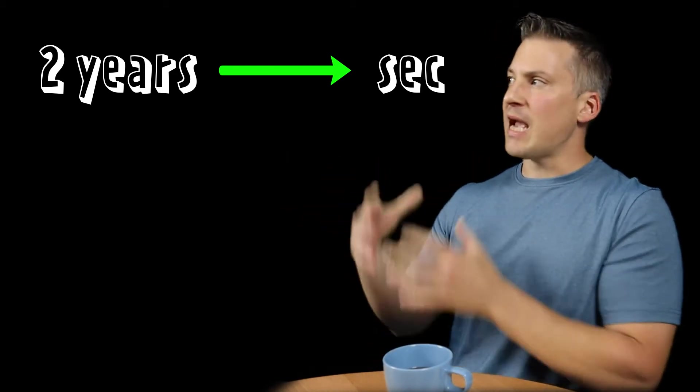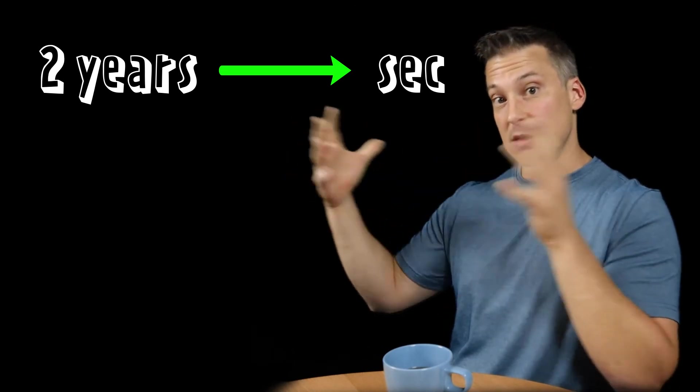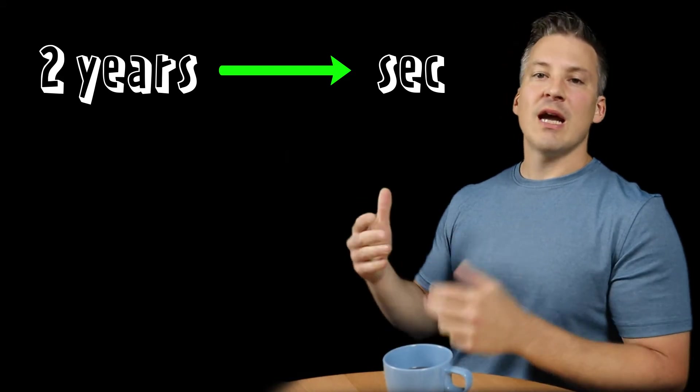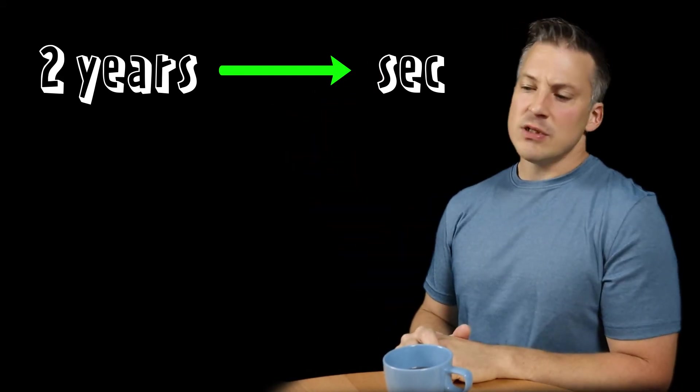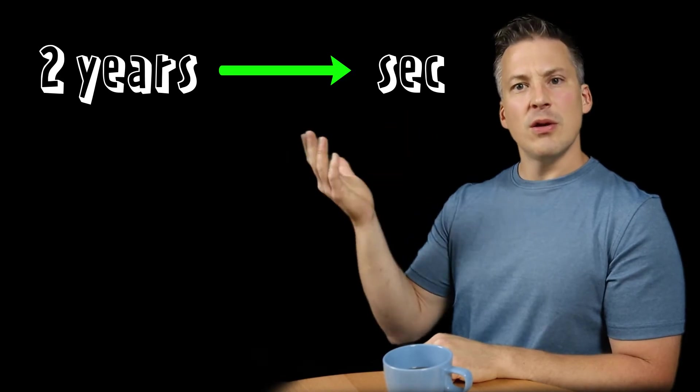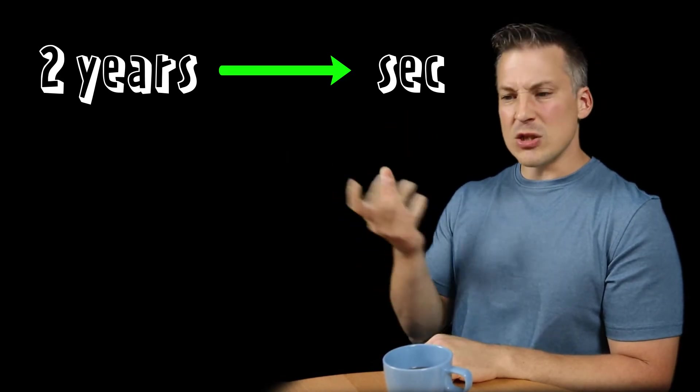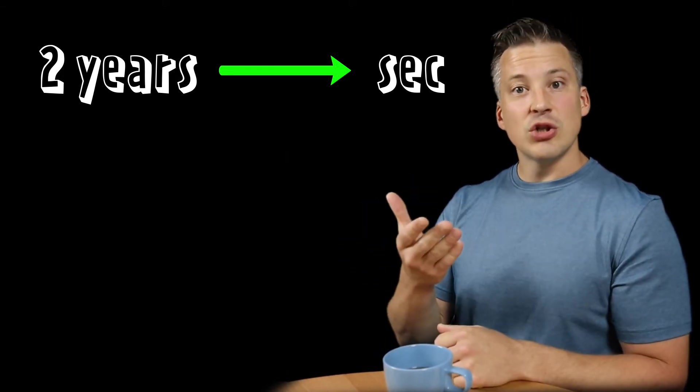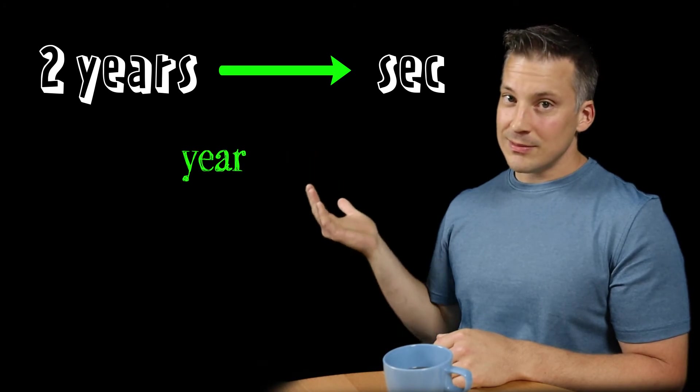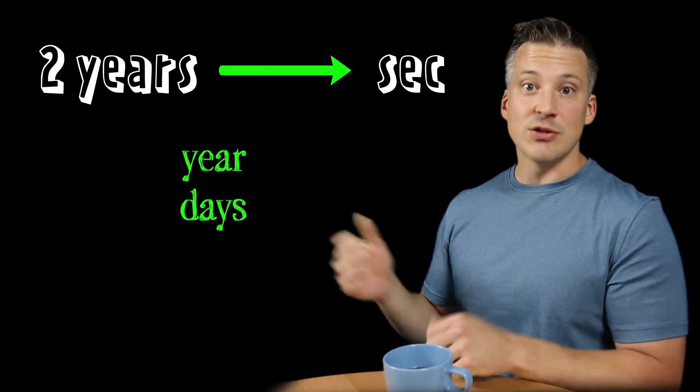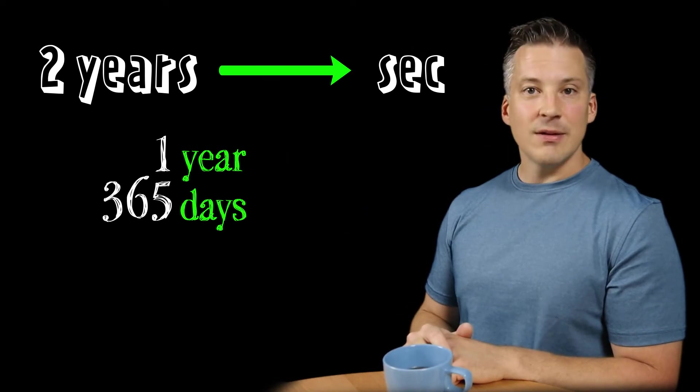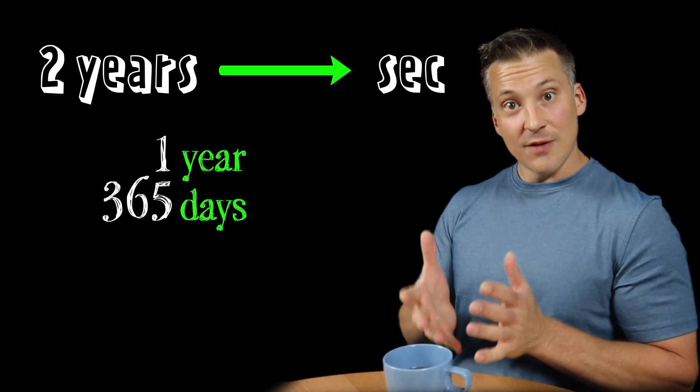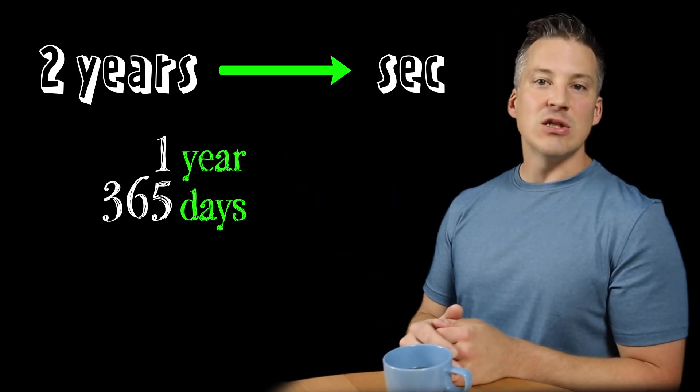Pretend you don't have Google because I'm sure you can plug it into Google and it'll tell you in one step. But let's say we don't have access to that. So we don't know that relationship between years and seconds. So what we have to do is do this in a series of multi-steps. And how I want to think about it is I have to go from a big unit of years—one year comprises a lot of time and a second comprises a small amount of time. So I know that I have to go from a larger unit down to a smaller unit. So the first thing I think about is, what do I know? Do I know any relationship between years and a smaller unit of time? And it turns out that we do. We know the relationship between years and days. How many days are in a year? 365.